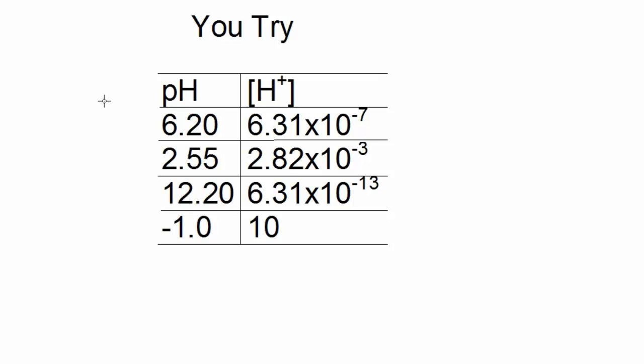Here are the answers to the previous table. You can see that positive pH values give hydrogen ion concentration values with negative exponents, and negative pH values give hydrogen ion concentration with positive exponents. In this case, it would just be positive 1.